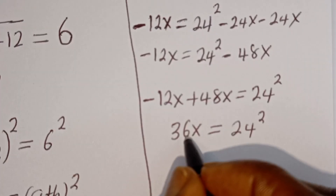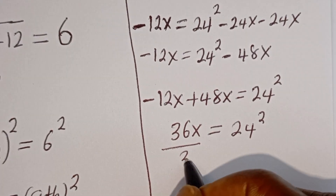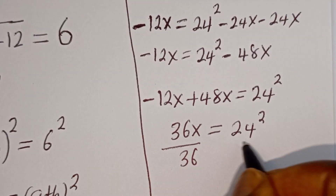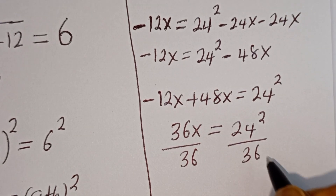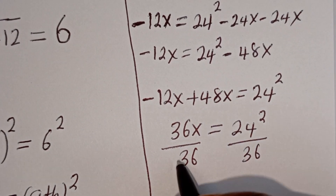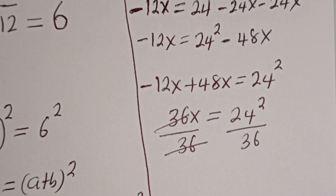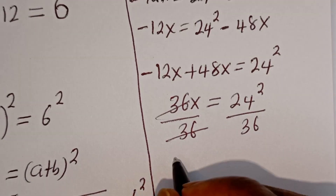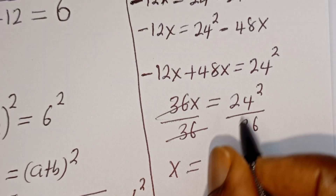Now we are looking for the value of x. Let's divide both sides by 36. We have x is equal to 24 squared divided by 36.